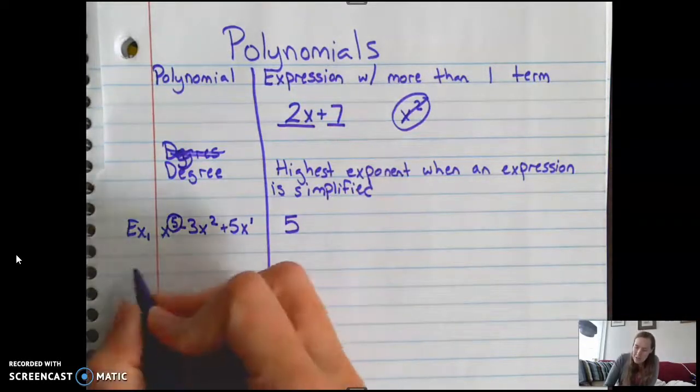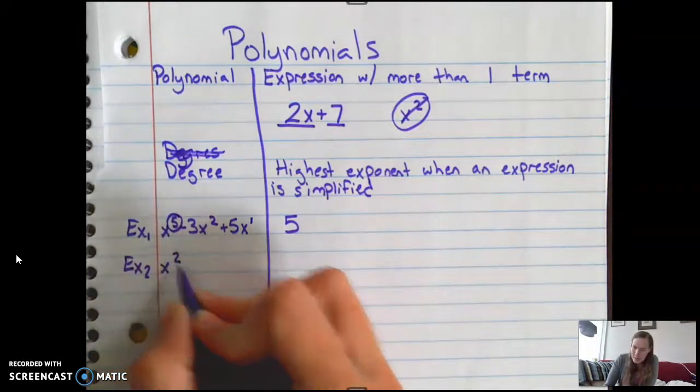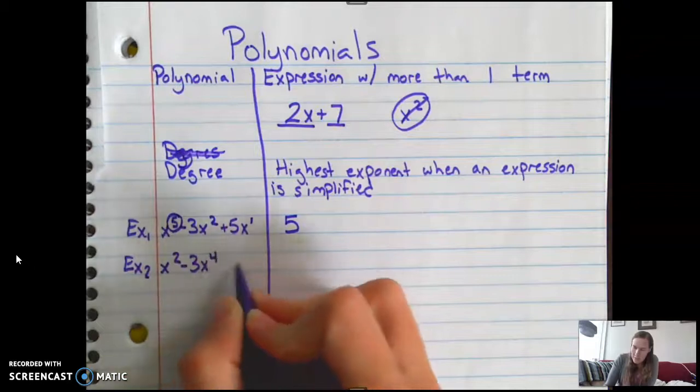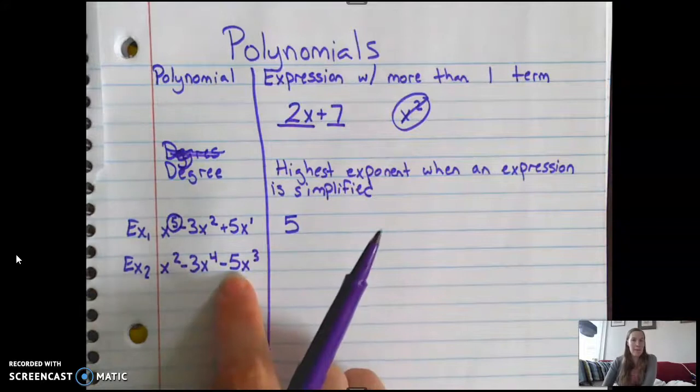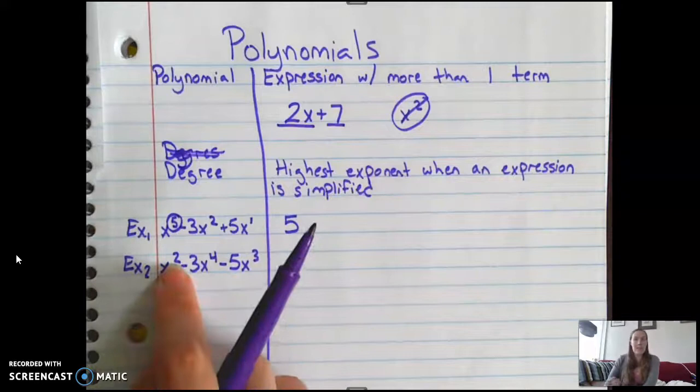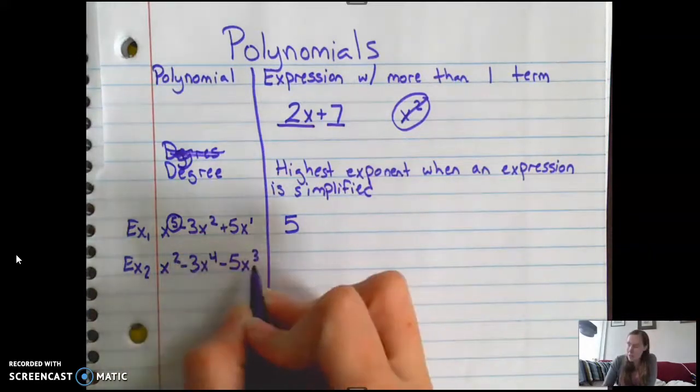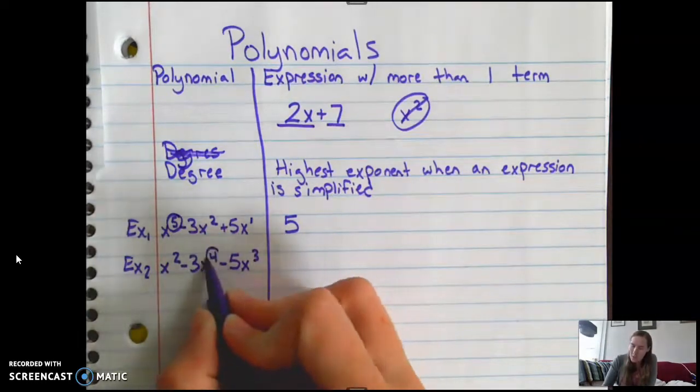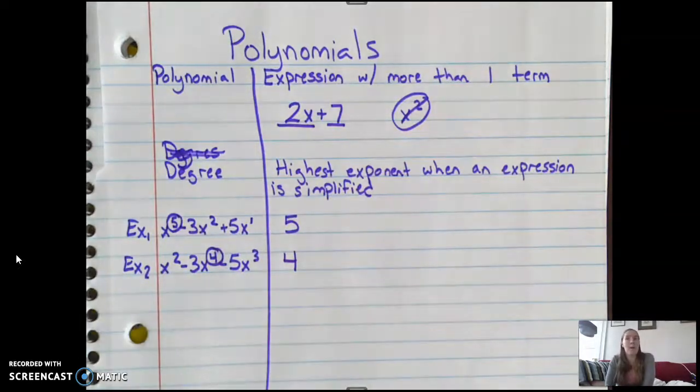So let's look at another example. Let's say I have x squared minus 3x to the 4th minus 5x cubed. Which one do you think is the degree? So some answers you might have had were 5 because that's the biggest number there is, or you could have said 2 because that's the first term. The correct answer is we need to look at only the exponents. So I have 2, 4, and 3. 4 is the biggest number. So 4 is my degree of my polynomial.